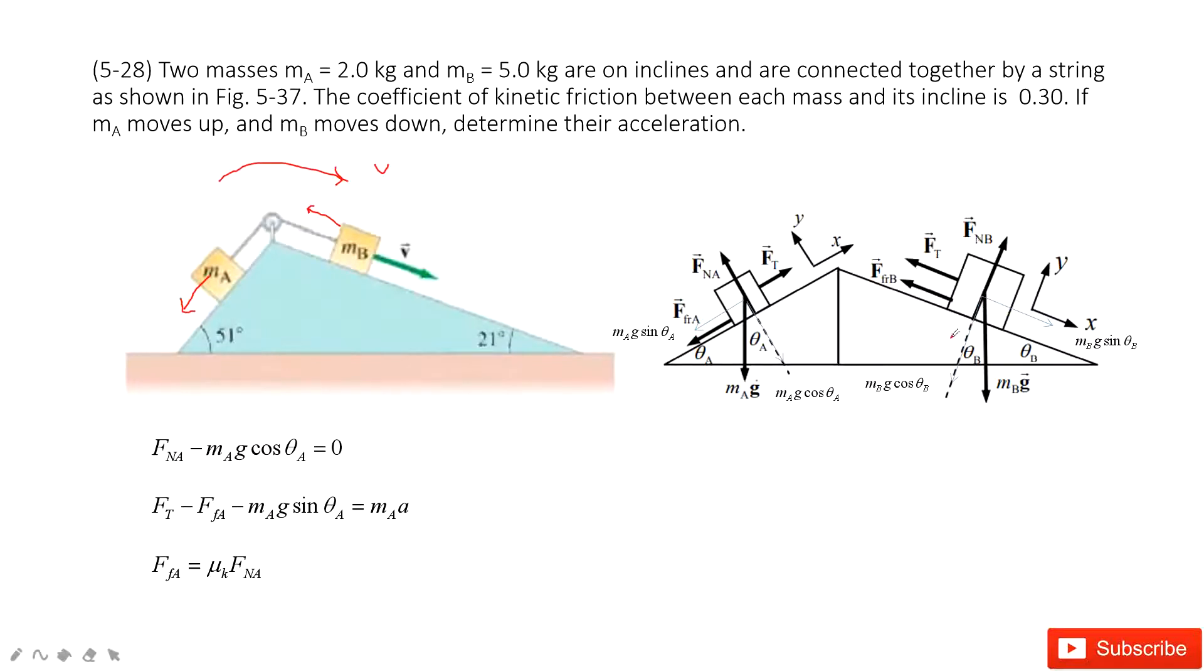And then we look at object B. For object B, we look at y-component. We have the normal force minus mg cos theta equals zero, because there is no motion at the y-component.